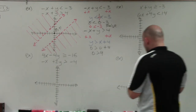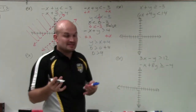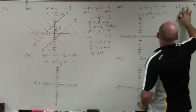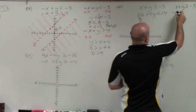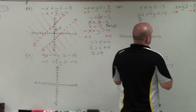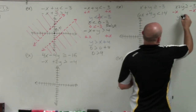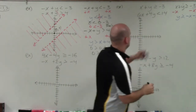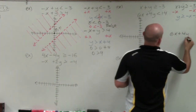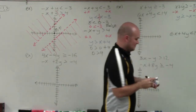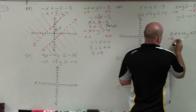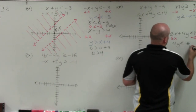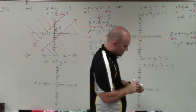Now for the next example, we're going to do the same thing and rewrite in slope-intercept form. I have x plus y is greater than or equal to negative 3: subtracting x from both sides gives y is greater than or equal to negative x minus 3. The second equation is 6x plus 4y is less than 14: subtracting 6x gives 4y is less than negative 6x plus 14.